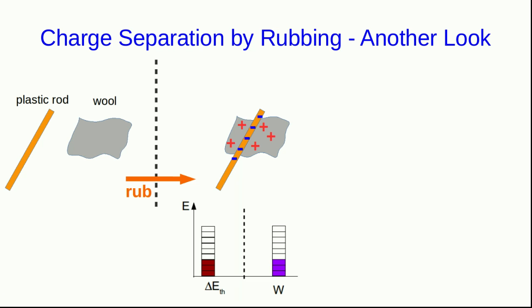And initially all that does is produce thermal energy in the system. Although the wool is now positive and the plastic rod is now negative, those positive and negative charges are still right next to each other, and so they don't have any potential energy.